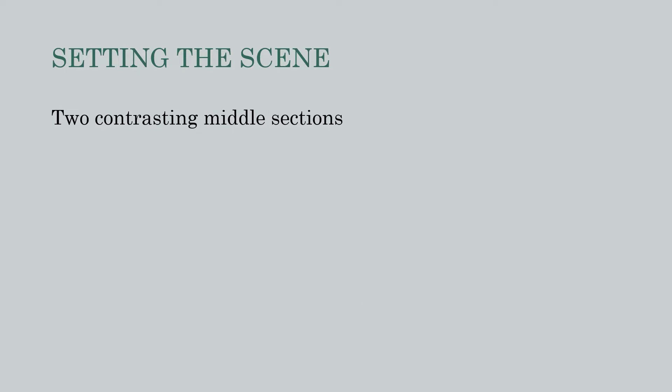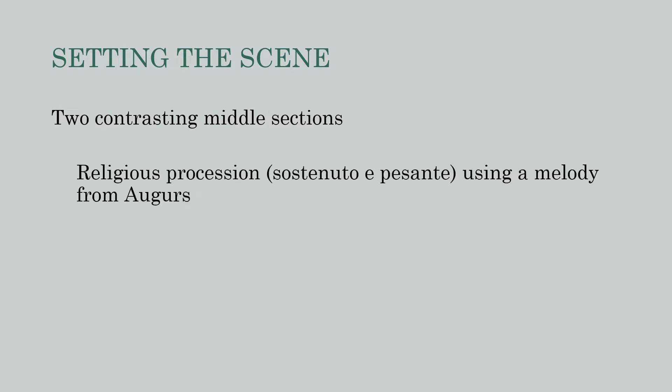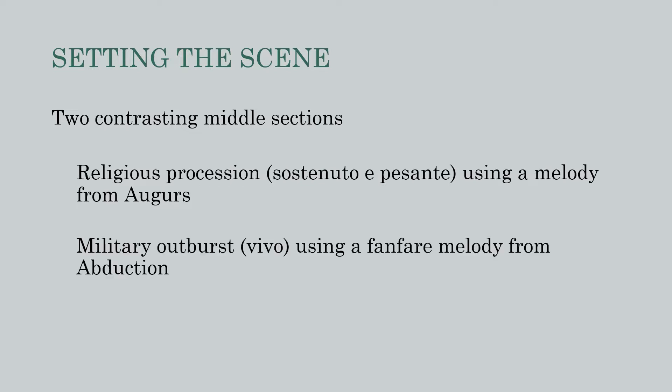There are two contrasting sections in the middle. The first is a religious procession, marked Sostenuto e Pisante, that features a melody we first heard in augurs of spring. The second is a military outburst, marked Vivo, where the fanfare from abduction makes a reappearance.